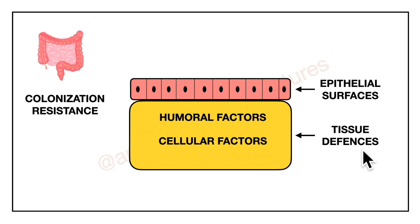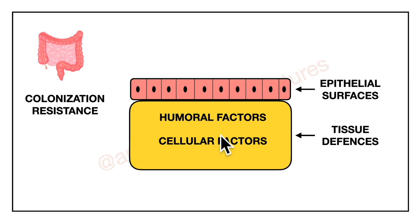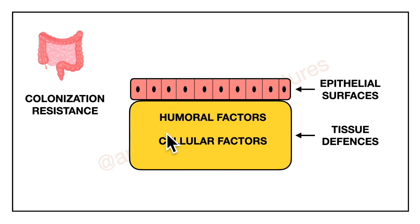If the barrier of the body — the epithelial surface — is overcome by microorganisms, a number of factors in the normal tissue as well as in body fluid play their role in immunity. These tissue factors are divided into humoral factors and cellular factors.